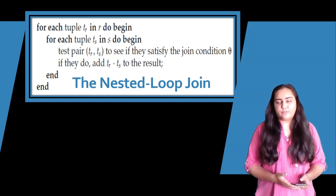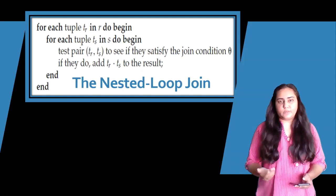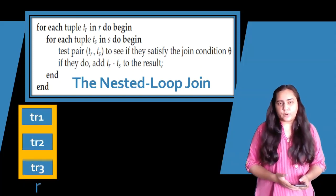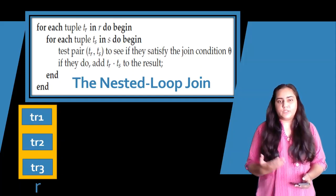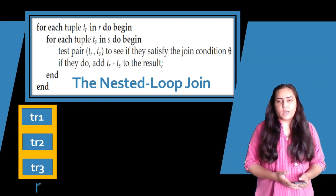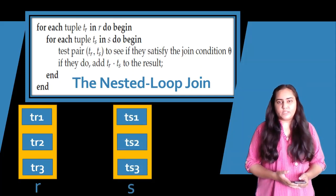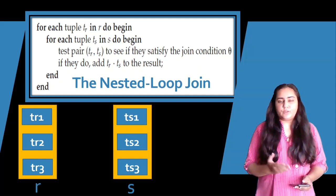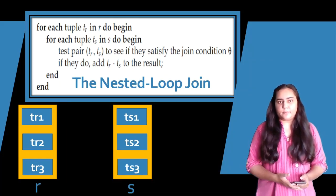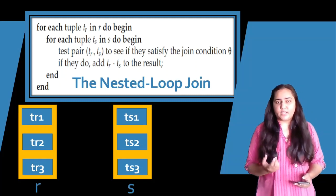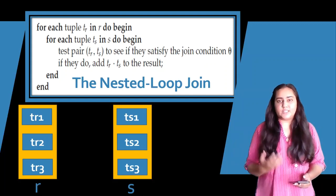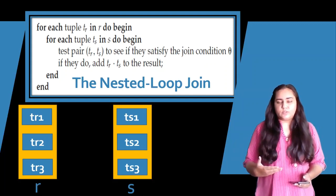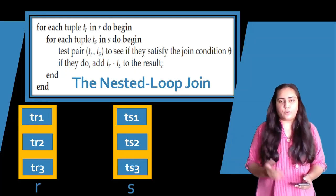Suppose you have written a join query between two tables — let's call one of those tables R. There's a relation R with rows TR1, TR2, and TR3, which are tuples. Then there's another table S with tuples TS1, TS2, and TS3. Remember that when I say TR1 it is not one value — it is an entire row containing all the columns.